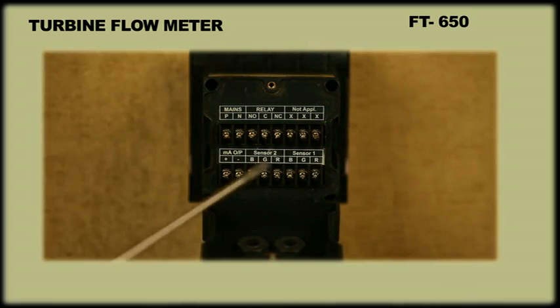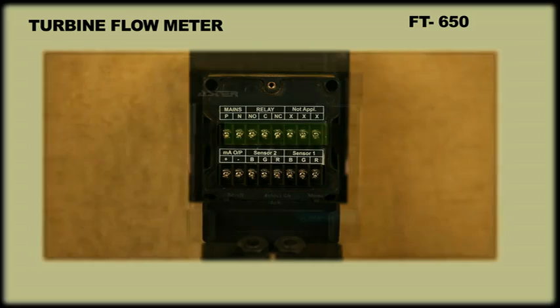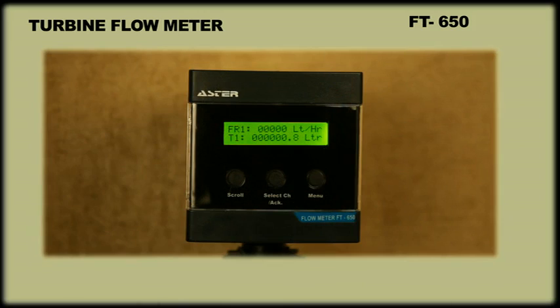FT-650 has a facility to connect a second-flow sensor to act as a dual-channel indicator. It can measure flow rate from 0.05 m³ per hour to 500 m³ per hour.